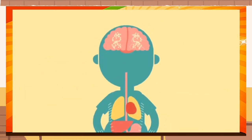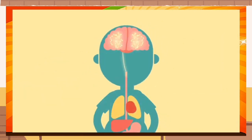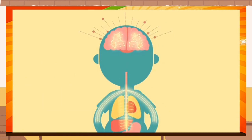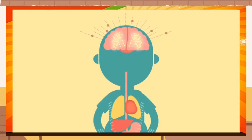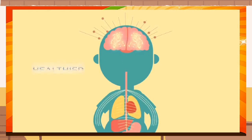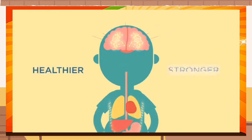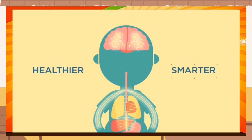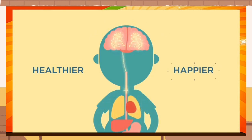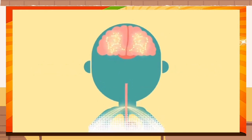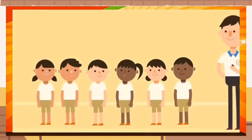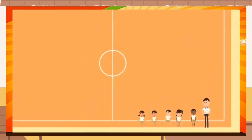Let's ask the brain. Here's John, a lower primary student, and here's John's brain. John's brain is the control center of his body and needs to be kept healthy and stimulated. The healthier John's brain is, the stronger, smarter, and happier John is. Numerous studies have shown that regular exercise stimulates the brain.